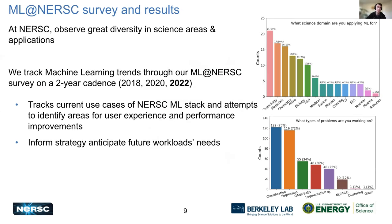At NERSC we see great diversity, because we're at Berkeley Lab with lots of exciting research across all sorts of science areas. One way we track this is with our machine learning surveys, happening again this year, which track current use cases of our ML stack, identify how to improve user experience and performance, and inform our strategy for future workloads. From these surveys we see diversity across cosmology, chemistry, biology, fusion, and more. The dominant applications tend to be classification or regression, but we also see exciting work with generative modeling, segmentation, and reinforcement learning.